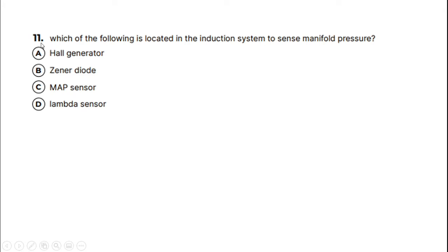Okay, this is question 11. Which of the following is located in the induction system to sense manifold pressure? Do we use a hall generator, a zener diode, a MAP sensor, or a lambda sensor?